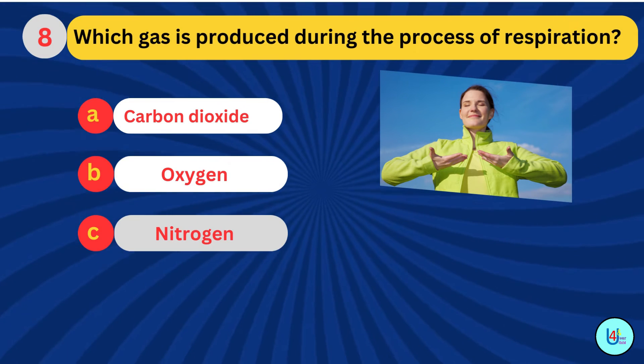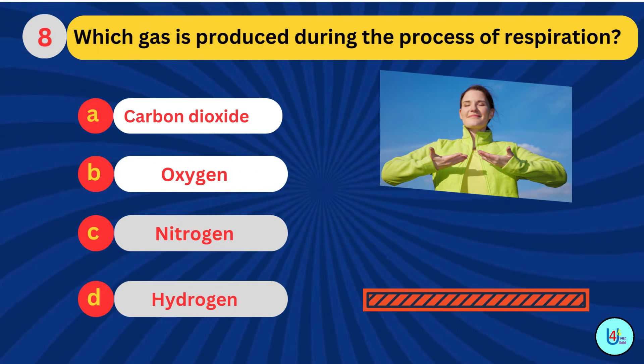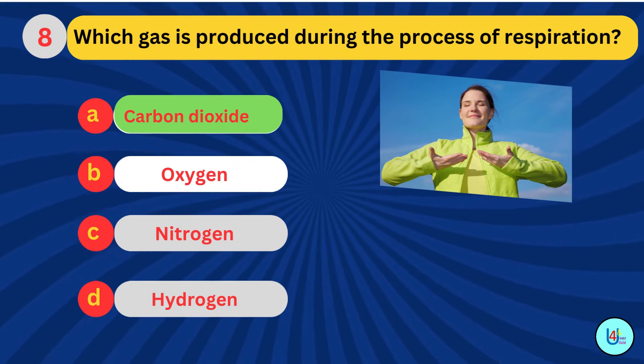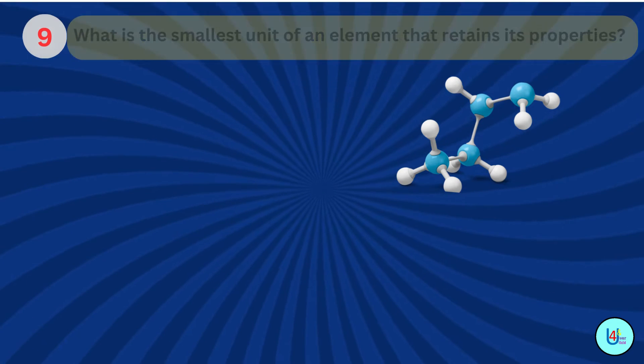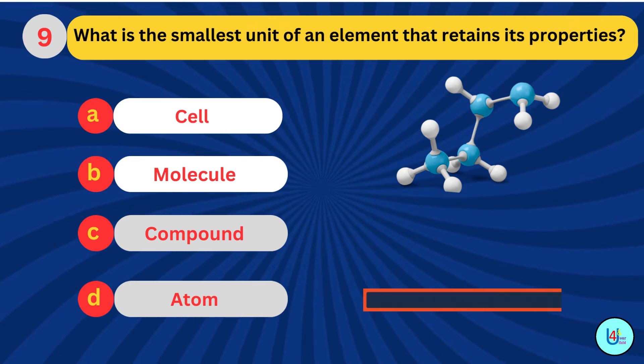Which gas is produced during the process of respiration? Carbon dioxide. What is the smallest unit of an element that retains its properties? Atom.